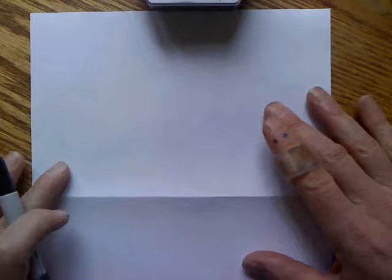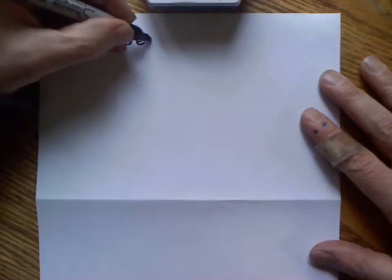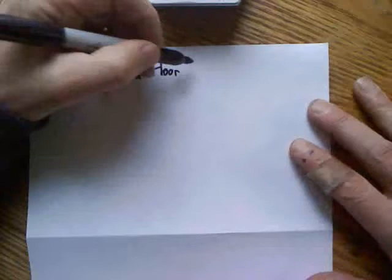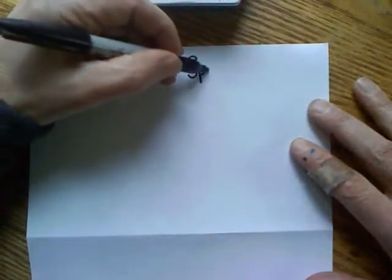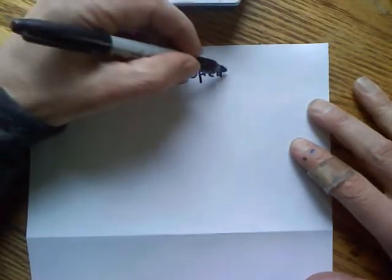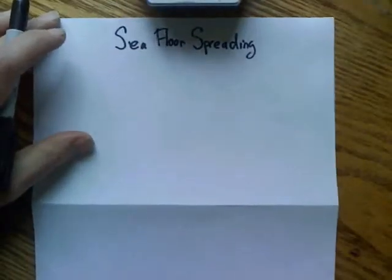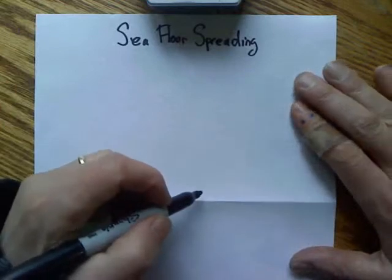First, align your paper so that it's portrait — not landscape, but vertical like this. You'll want to divide it in two; you can either draw a line with a ruler or just fold it in half. Then we're going to label the top half 'seafloor spreading.'